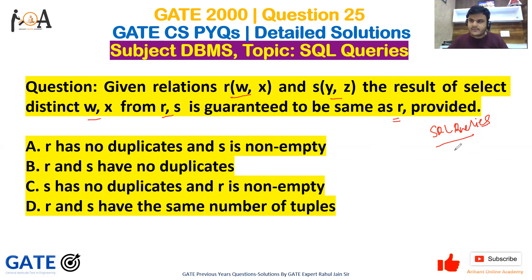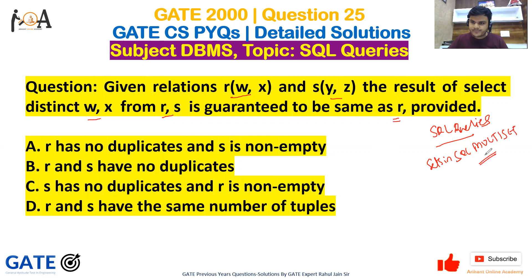One thing we can conclude is that sets in SQL are basically multi-sets — they are multi-sets. So if you see here, R has attributes W and X, and S has attributes Y and Z.